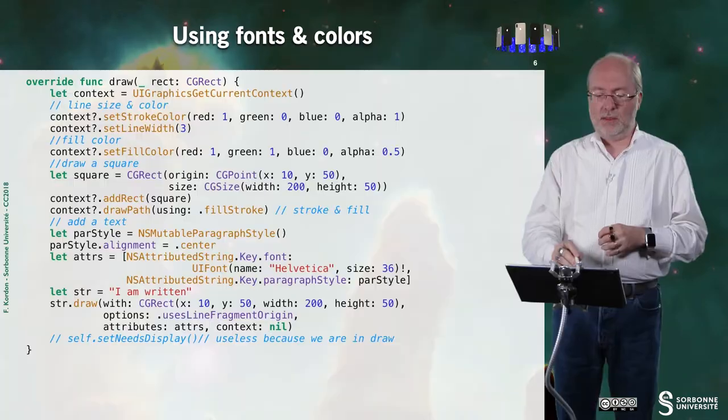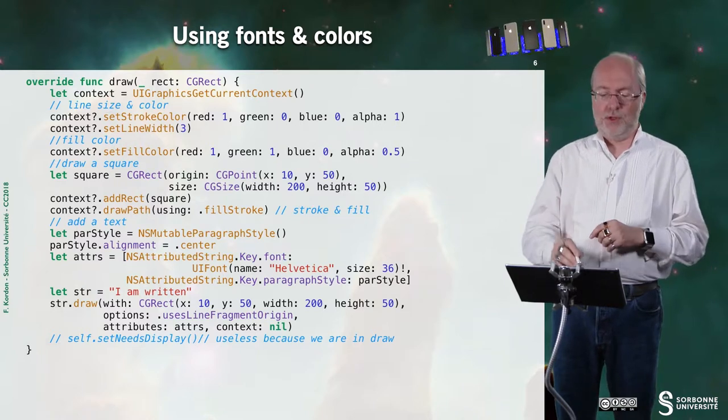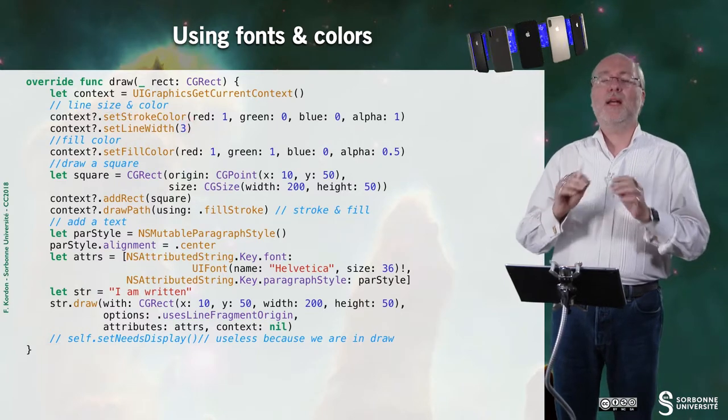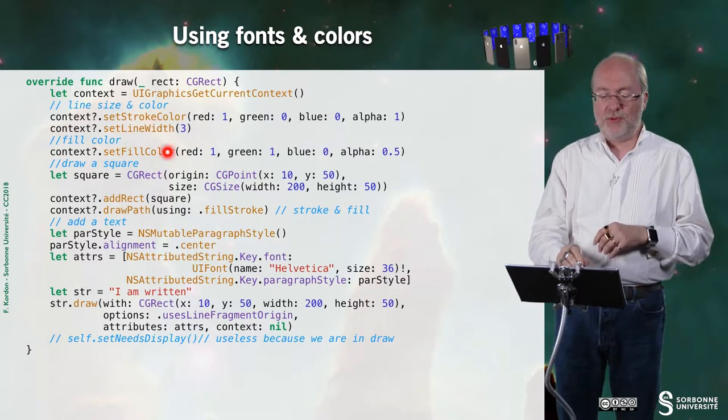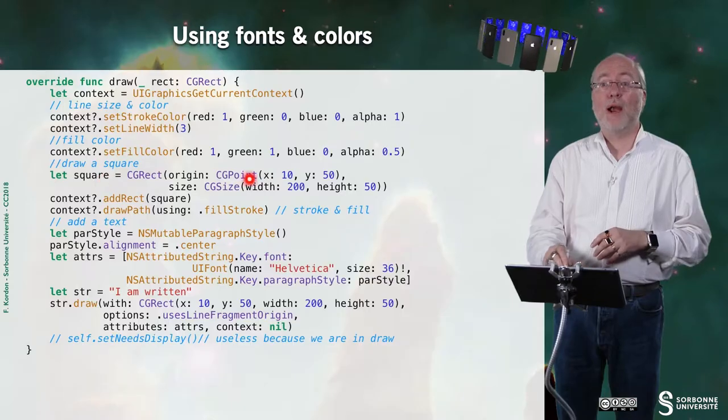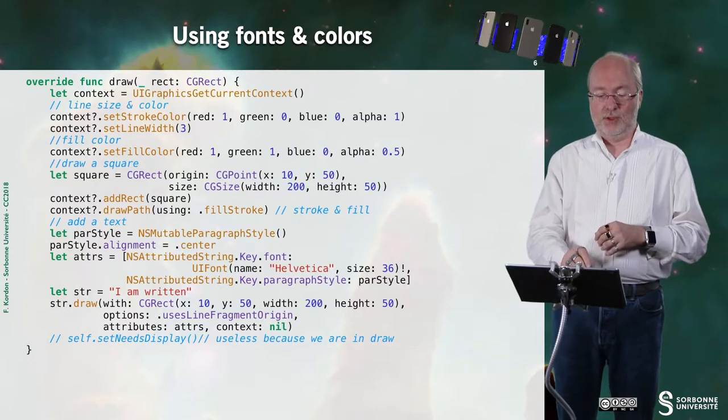You can also use fonts and colors to have some fancy display with Core Graphics. So here it's a little bit more complex. You start always with this context. Here I want to play with color. So this is the stroke color. And I change the width of the line. And I also set up a fill color. And I draw a square and add this square.